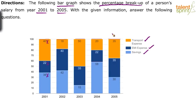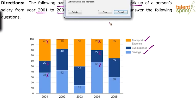So only three categories: transport expense, EMI expense, and savings. In 2001, the breakup is given. Similarly, the breakup of the remaining years is also given. For example, in 2004, he spent 20% on transport expenses, 22% on EMI, and the remaining 58% were his savings. Very simple data — all we can find out is the percentage expenditure on transport, EMI, or savings.